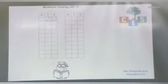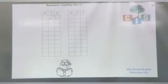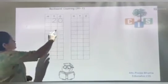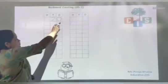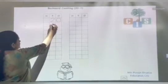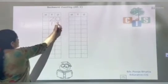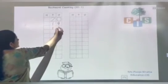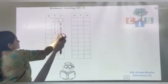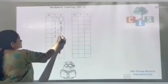Now all of you open your page number 30. Backward counting 20 to 1. Write the date first and then start. What is written? 20. What will be the smaller number? Yes, it will be 19. Then smaller than 19, 18. What comes before 18? 17. Then 16. Then 15. Then 14.